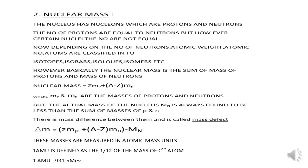Now let us know the nuclear mass. The nucleus has nucleons which are protons and neutrons. The number of protons are equal to the number of neutrons, but however, in certain nuclei, the numbers are not equal. Now depending on the number of neutrons, atomic weight, atomic number, atoms are classified into isotopes, isobars, isochores, and isomers.